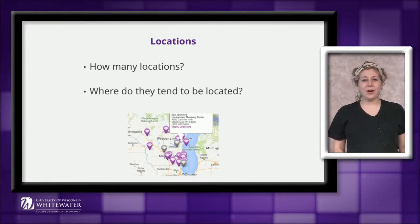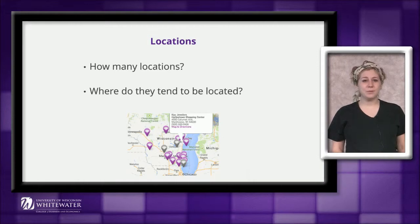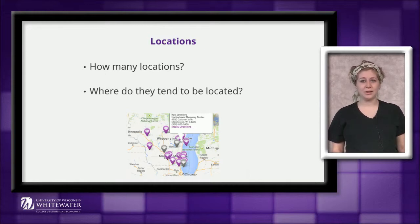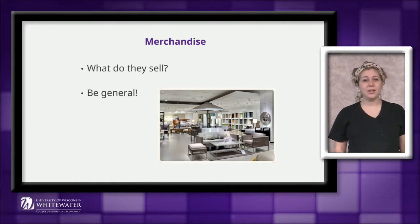Your second slide will also need to include information on the retailer's locations. About how many locations does the retailer have? Where do their stores tend to be located? Approach this second question generally — you don't need to list every single location. Instead, talk about whether they are located in one specific region of the U.S., or if they tend to be located in large cities, or if they are located in several countries. You can usually find this information on the retailer's homepage. Finally, you'll need to find information on merchandise. The retailer's website is usually a great way to determine what the retailer sells in general. If you come across additional information in other sources, you can include that as well.